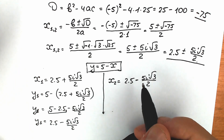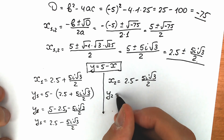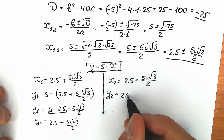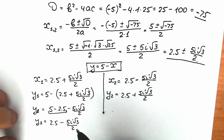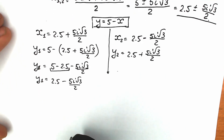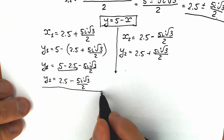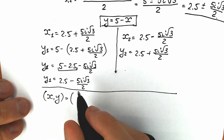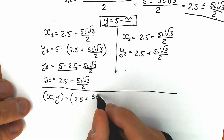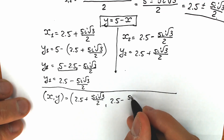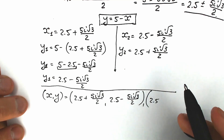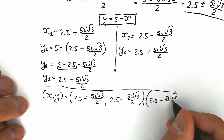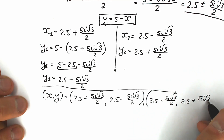And we will have absolutely the same thing for y₂ but with the opposite sign, giving y₂ equals 2.5 plus 5i√3/2. A lot of students say this is a complicated expression — we have a square root, a fraction, numerator, denominator, imaginary part, and real part. Let's check and prove it. So our two pairs of solutions are: (x₁, y₁) = (2.5 + 5i√3/2, 2.5 − 5i√3/2) and (x₂, y₂) = (2.5 − 5i√3/2, 2.5 + 5i√3/2).